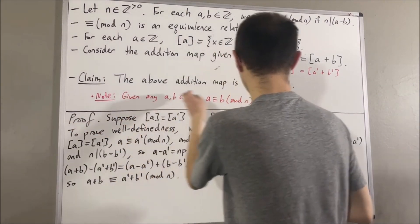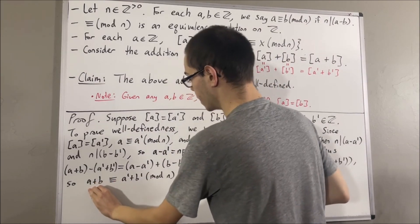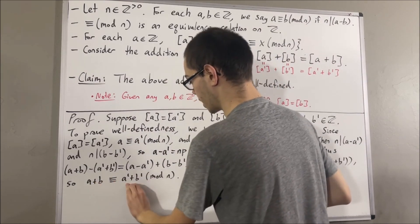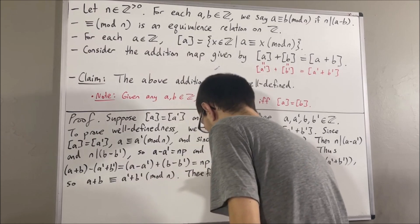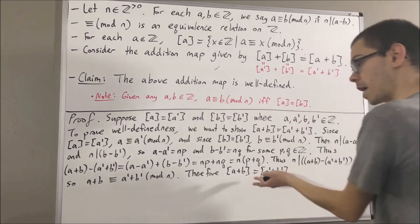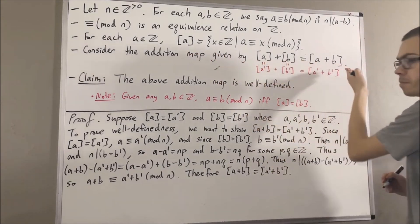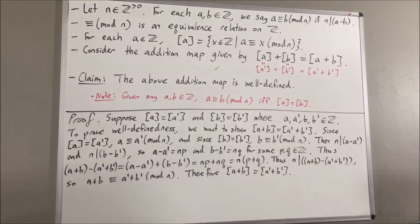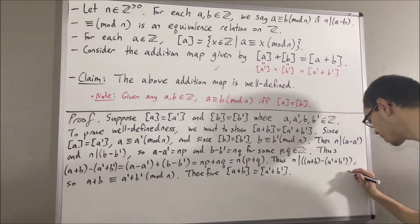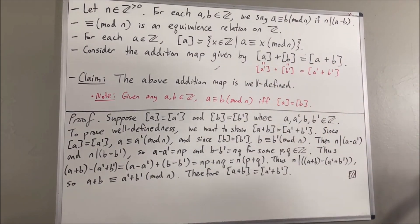Then, according to this result, this implies that the equivalence class of a plus b is equal to the equivalence class of a prime plus b prime. And that is exactly what we wanted to show in order to show that this operation is well-defined. That's pretty much it for this video — it's a very interesting idea. Thanks!